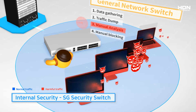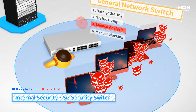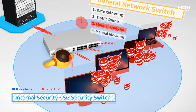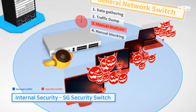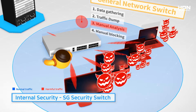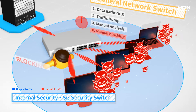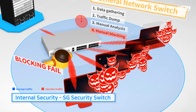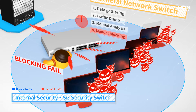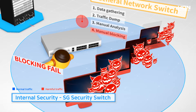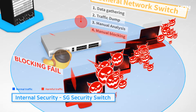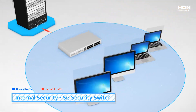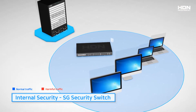In a general network environment, a quick response and fast resolution is not possible because harmful traffic needs to be analyzed manually. In the meantime, the harmful traffic spreads to the whole network and brings the network down.